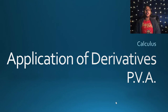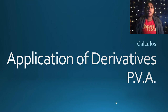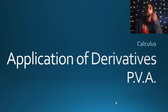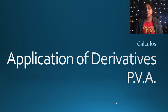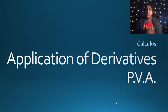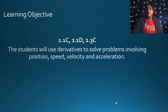Welcome to our first video on unit 5. We're still talking about applications of the derivative, but now we're moving on to PVA — position, velocity, and acceleration. The next two videos will be over related rates and optimization, and then that's it for unit 5.